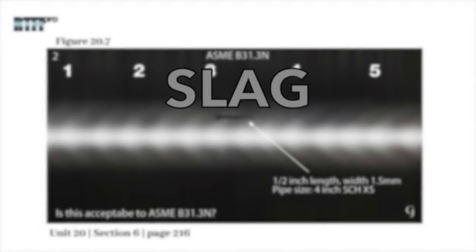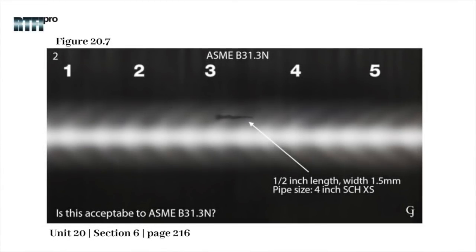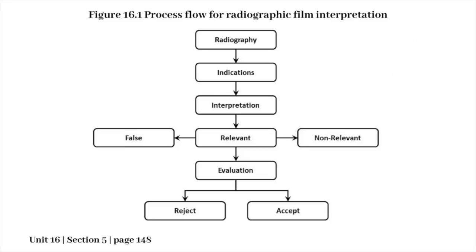The maximum elongated slag indication allowed is two times the wall thickness. The wall thickness for 4 inch extra strong is 0.337 inch. As the indication is 0.5 inch in length, it is therefore acceptable.